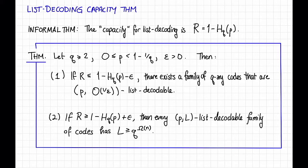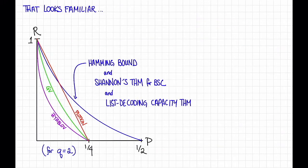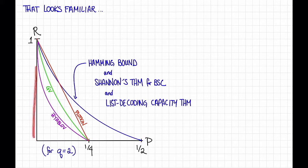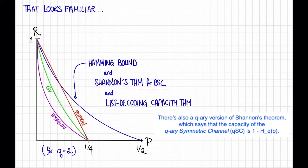Before we prove this statement, let's interpret this quantity. That might look a little bit familiar. Let's return to our plot. Here p, the fraction of errors, is on the x-axis, and r, the rate, is on the y-axis. What we see is that the list decoding capacity theorem — 1 minus the q-ary entropy of p, with this picture for q equals 2 — is exactly the same as both the Hamming bound and Shannon's theorem for the binary symmetric channel.